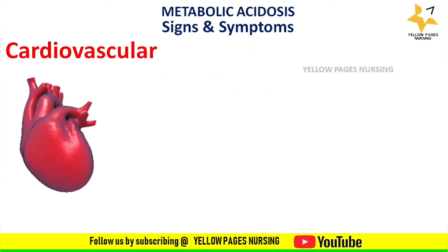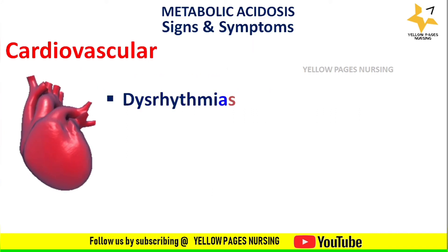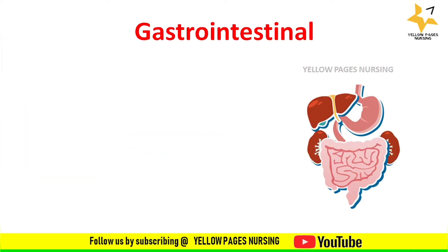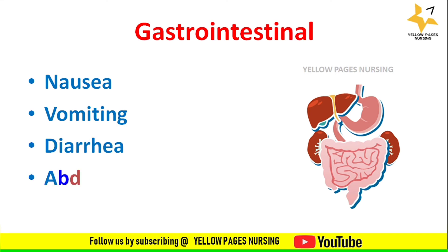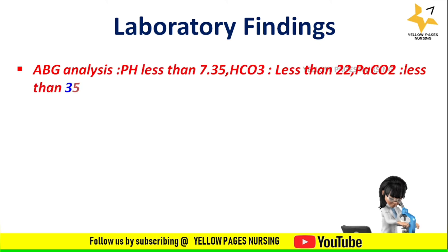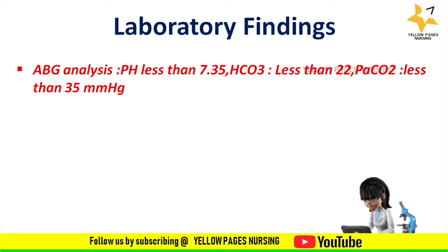The integumentary symptoms include cold and clammy skin or warm and flushed skin. Cardiovascular signs and symptoms include dysrhythmia related to hyperkalemia, hypotension, and shock. Gastrointestinal symptoms include nausea, vomiting, diarrhea, and abdominal pain.